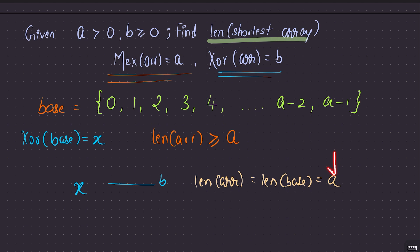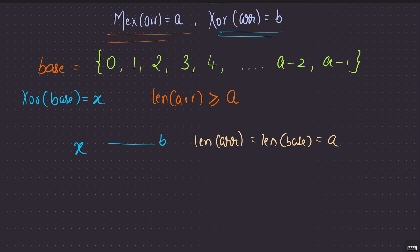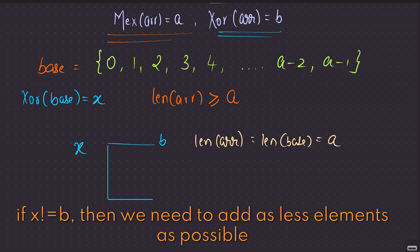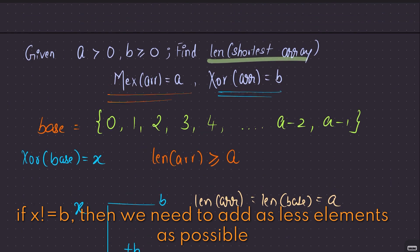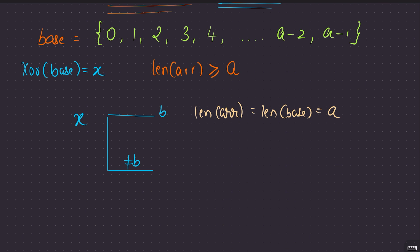But what if X is not equal to b? You must add more elements. Remember, we are trying to satisfy the XOR condition. Be thorough with the fundamental properties of XOR. X XOR 0 is simply X; X XOR 1 is X flipped. And very importantly, if you XOR a number with itself, it becomes 0. This property is what should ring something in your head.